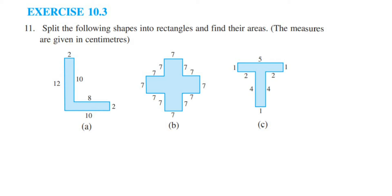Hey everyone, here I am doing exercise 10.3, 11th question. The chapter is Mensuration of class 10. The question is: split the following shapes into rectangles and find their area. The measures are given in centimeters. So the first one is in the shape of an L, and they have given different parameters — the dimensions.